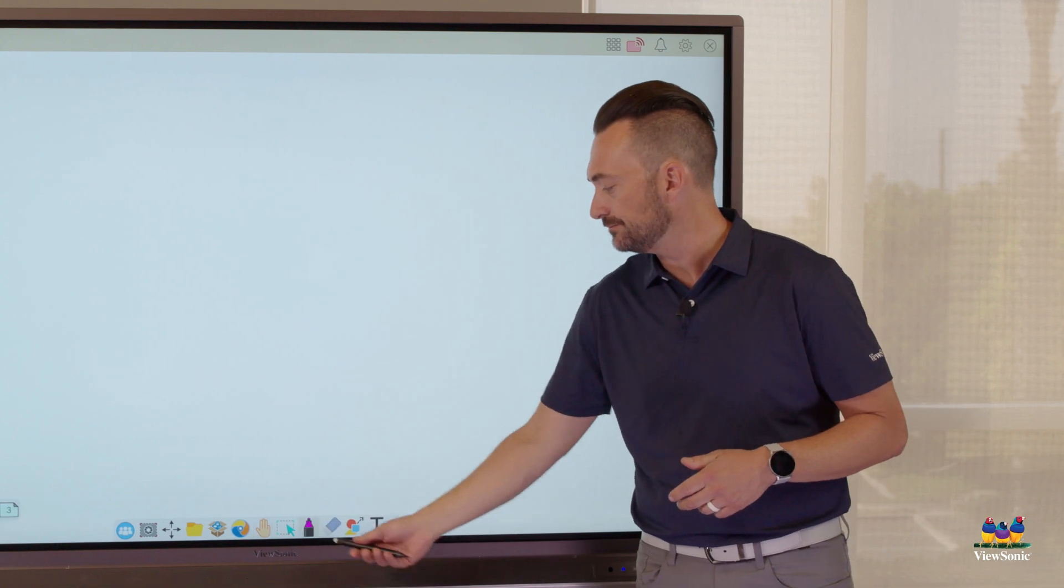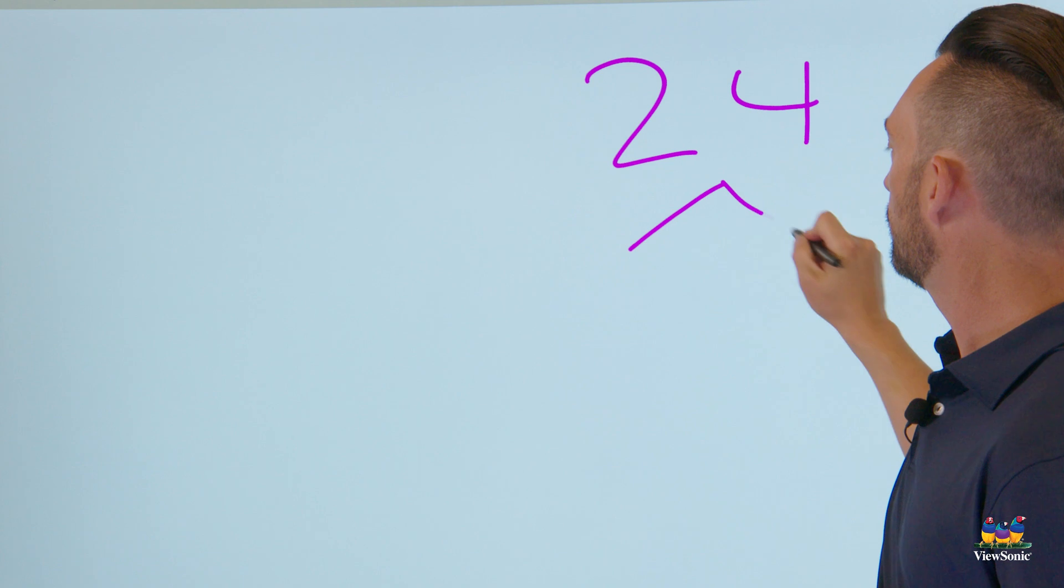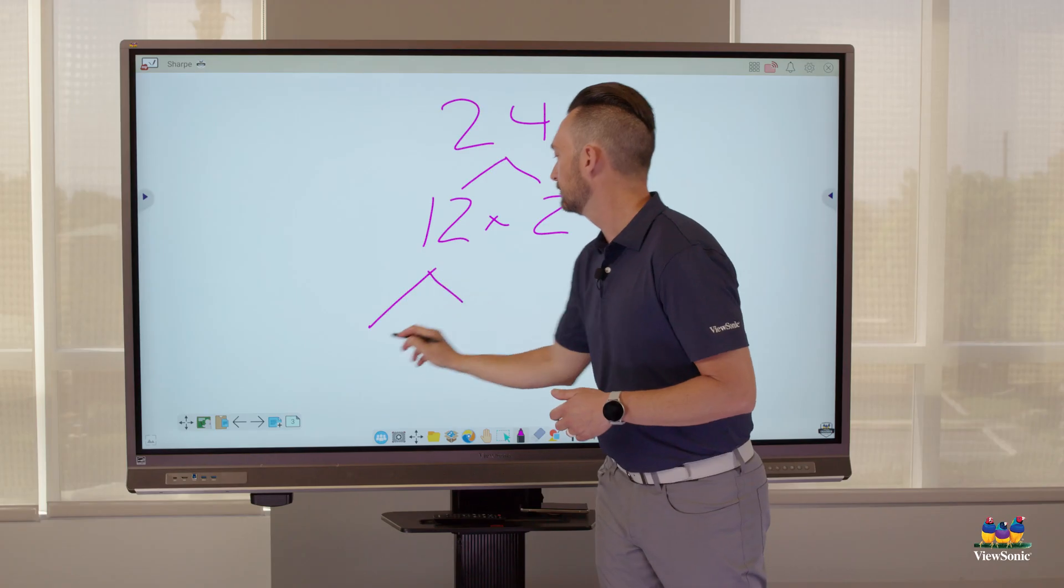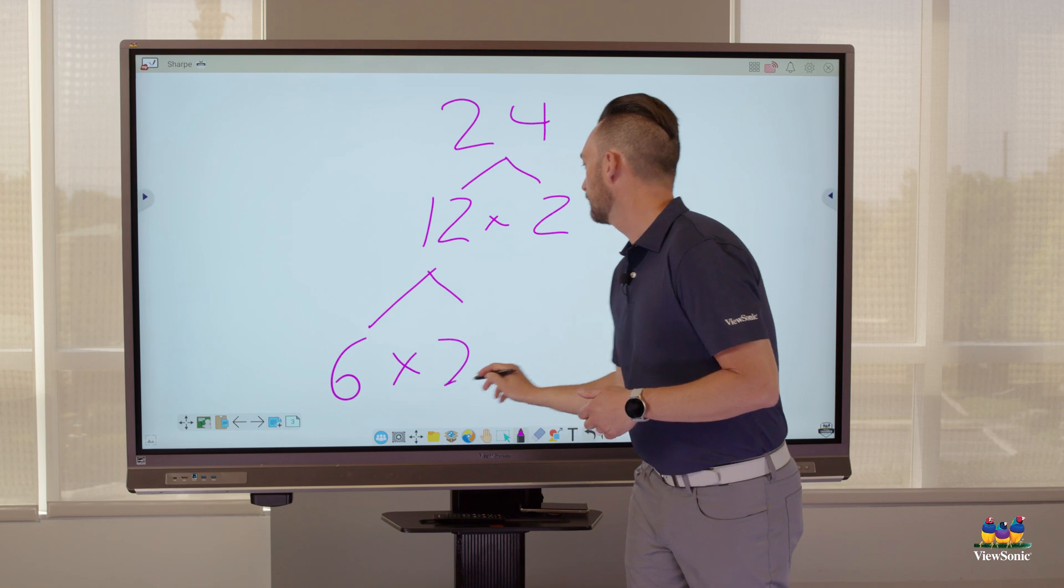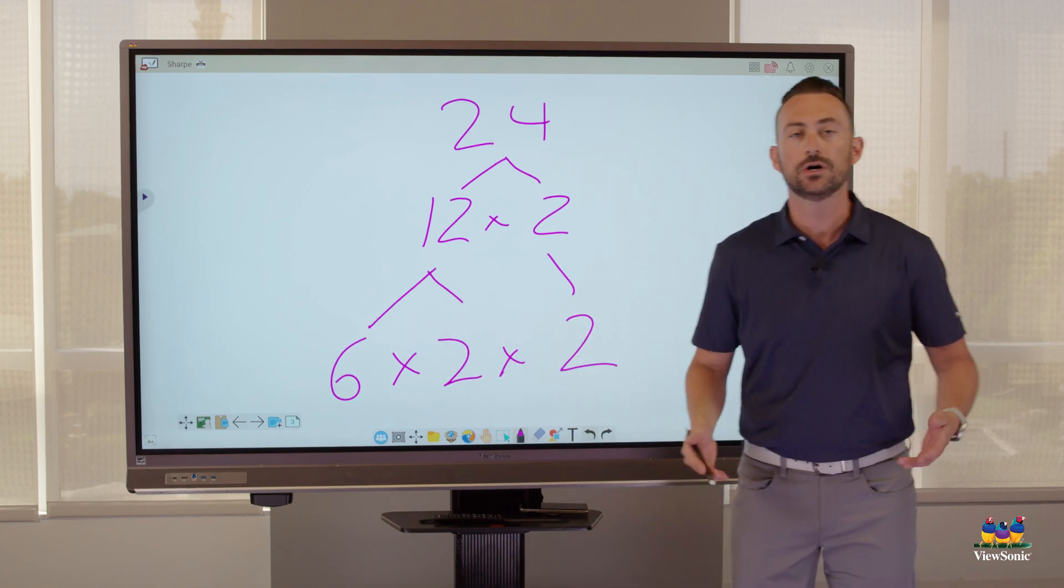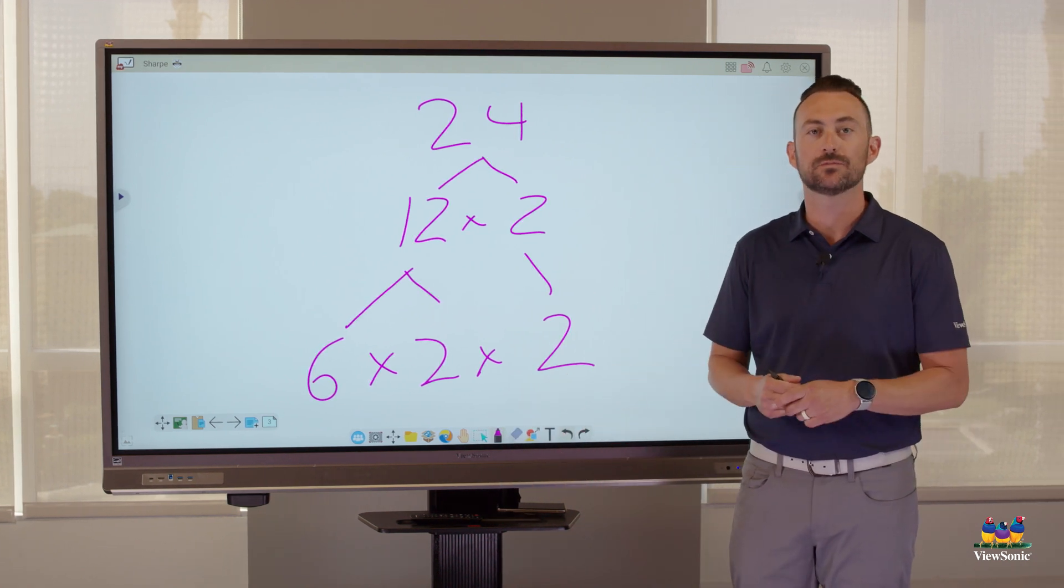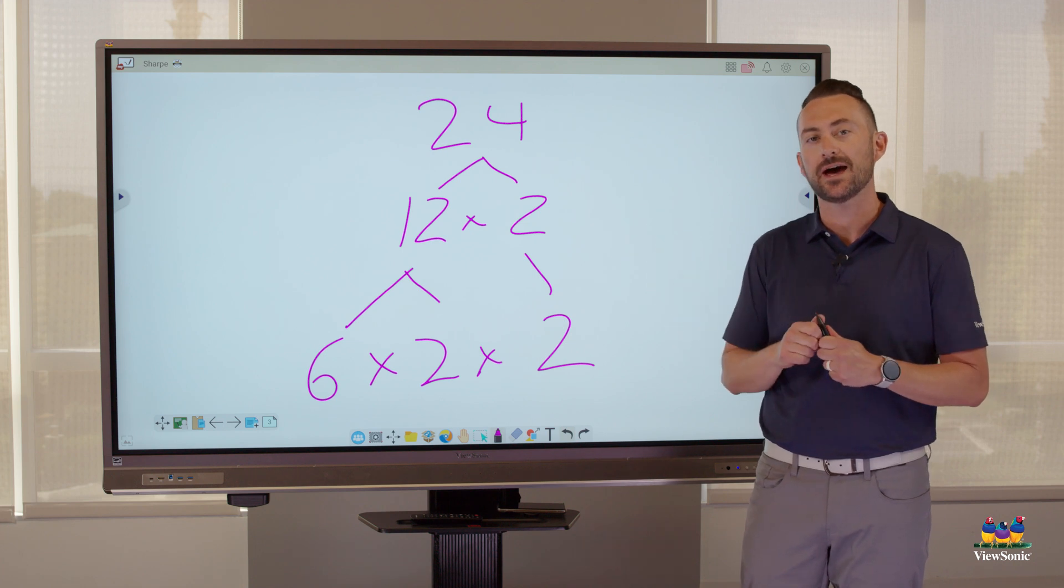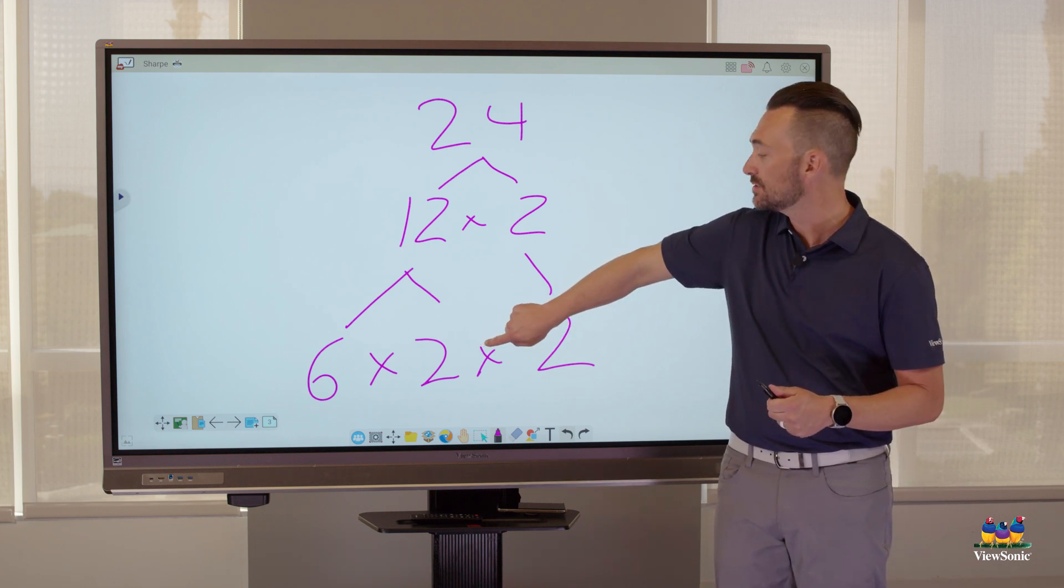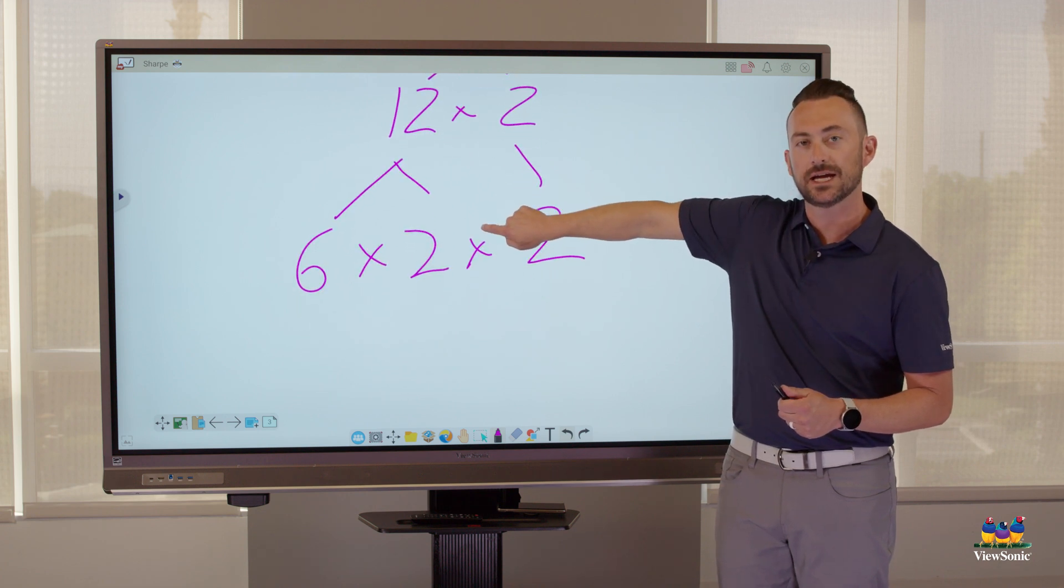Pretend you're doing a lesson on factoring. And of course, we run out of room. Normally, we would have to select the hand tool or Infinite Canvas to give us more space. But because we have that option enabled in the settings, all I have to do is use my hand and it automatically activates that Infinite Canvas.